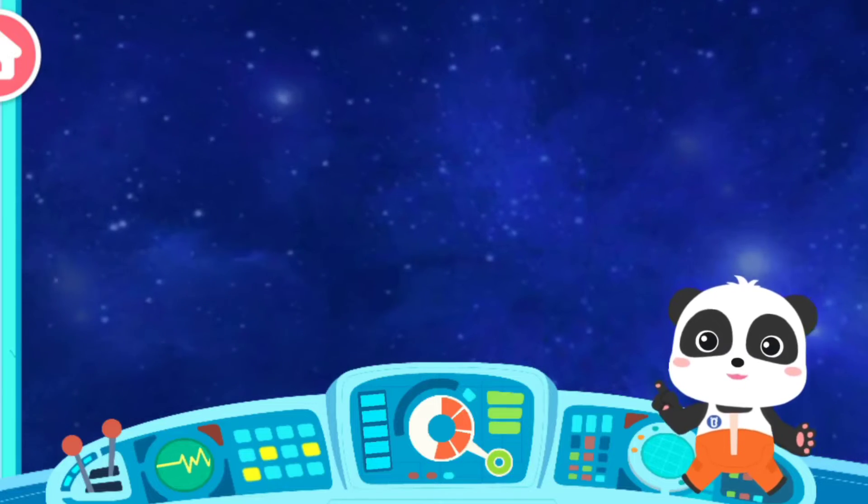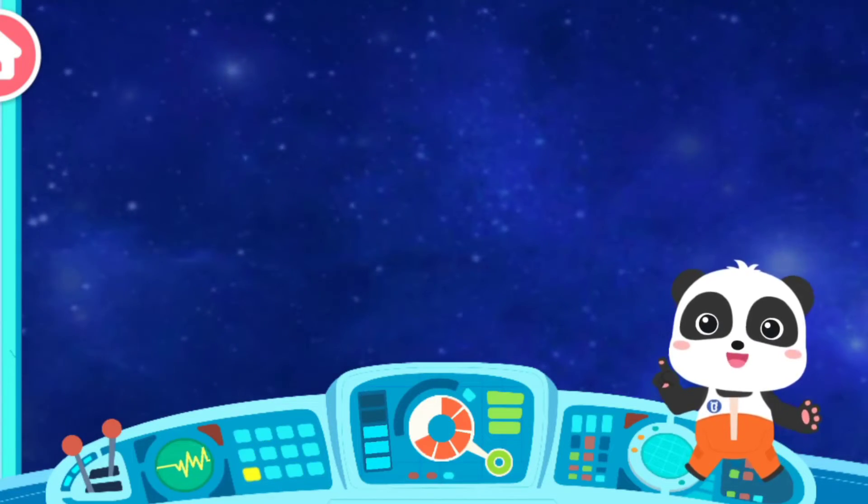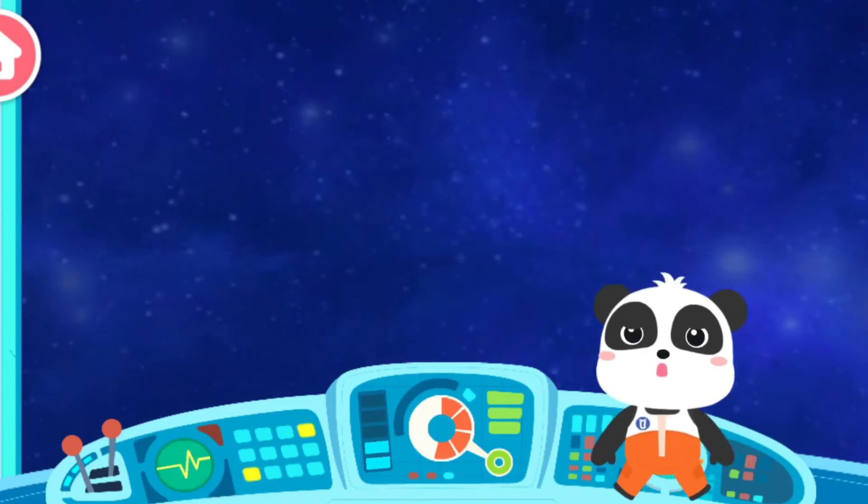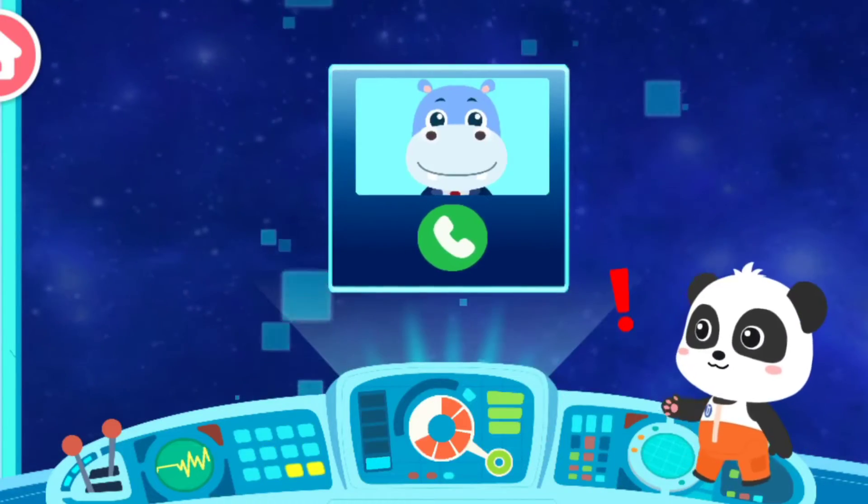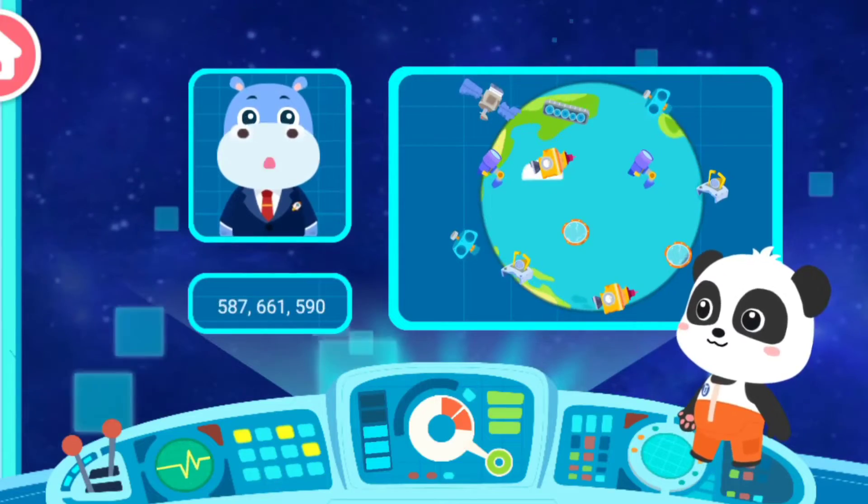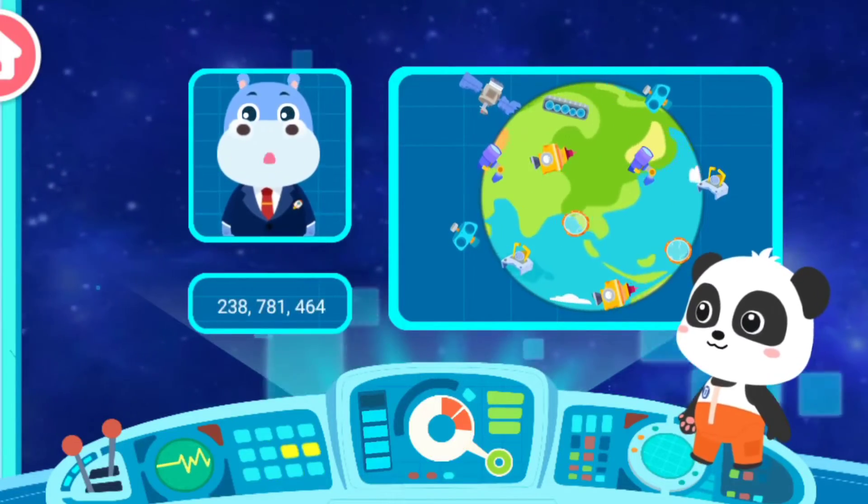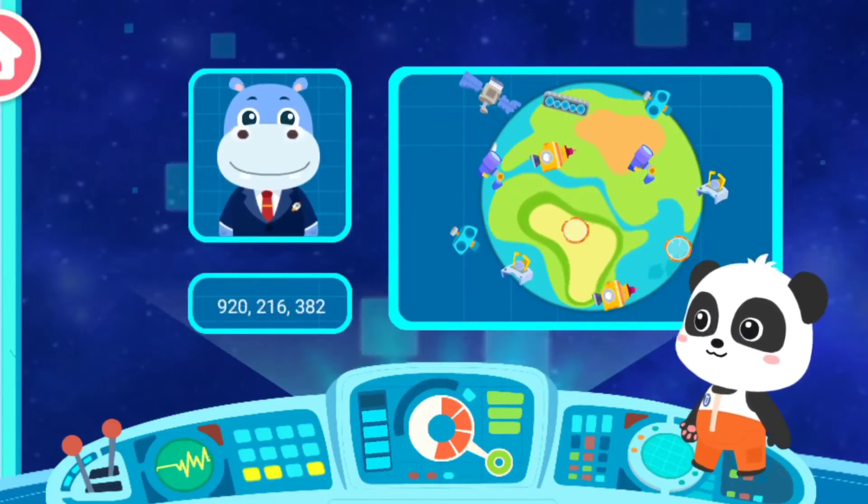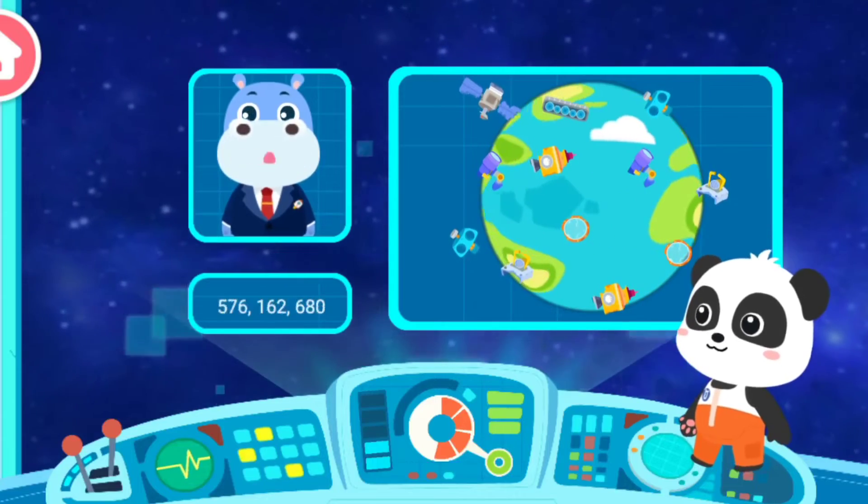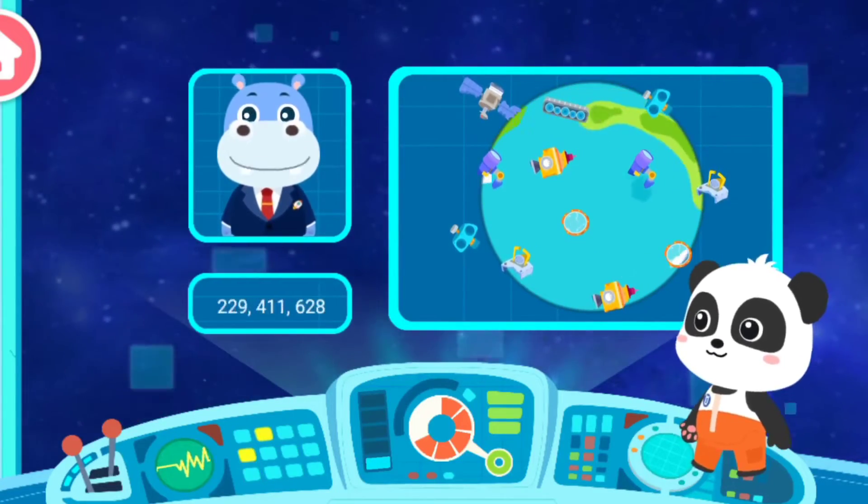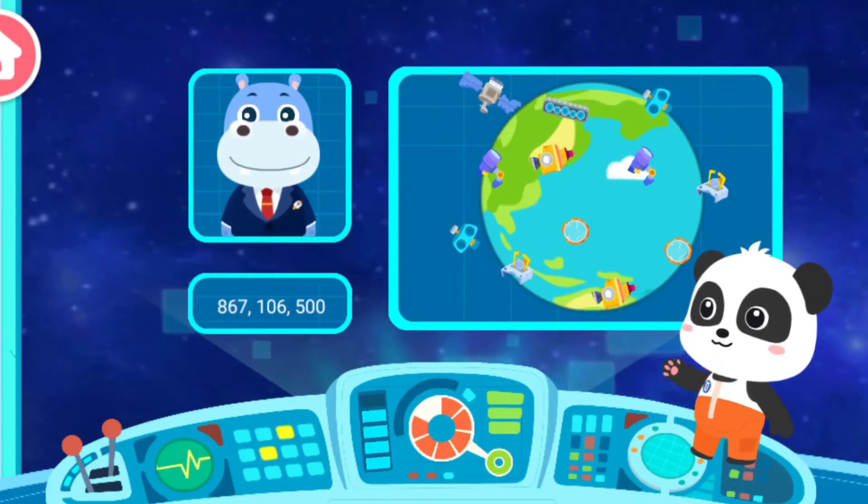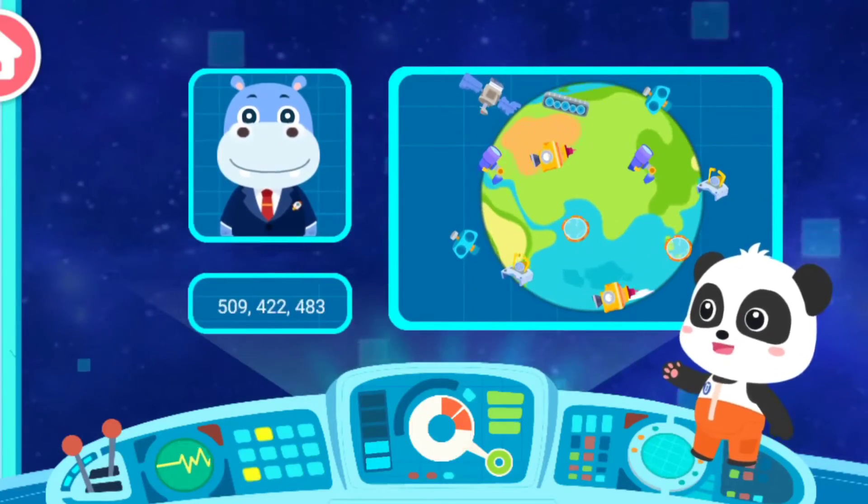We can float around in the space station as there's no gravity here. I am Chief Hank. Now there's a lot of space junk above the Earth. It seriously impacted the mission of rocket launch on the Earth. Please set out to clean it up as soon as possible. Okay, we'll be sure to accomplish the mission.